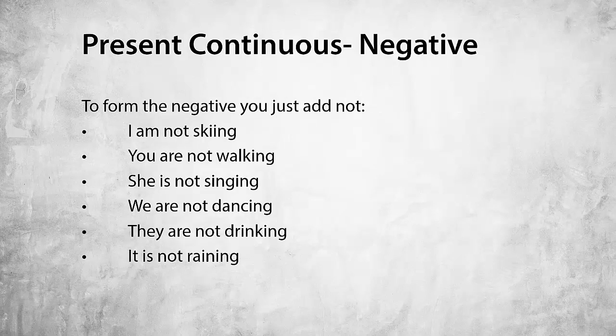To form the negative, you just add 'not' after the to-be verb. So: I am not skiing. You are not walking. She is not singing. We are not dancing. They are not drinking. It is not raining.